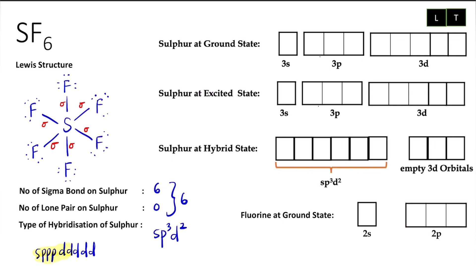Now we go for the hybridization process. Sulfur at ground state — we have 6 valence electrons in period three: one, two, three, four, five, six. Because we need 6 sigma bonds, that is why I will excite the electrons from the lower energy orbital to the higher energy orbital to get 6 unpaired electrons.